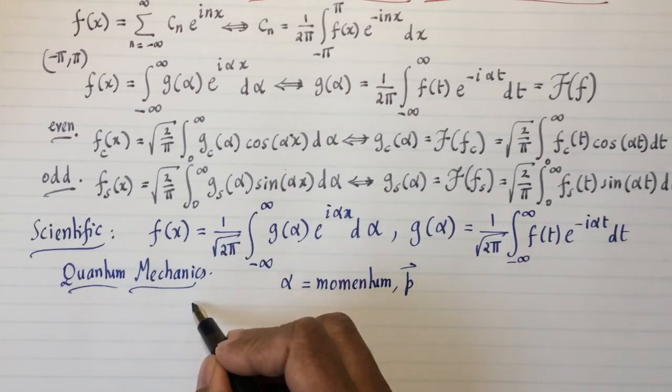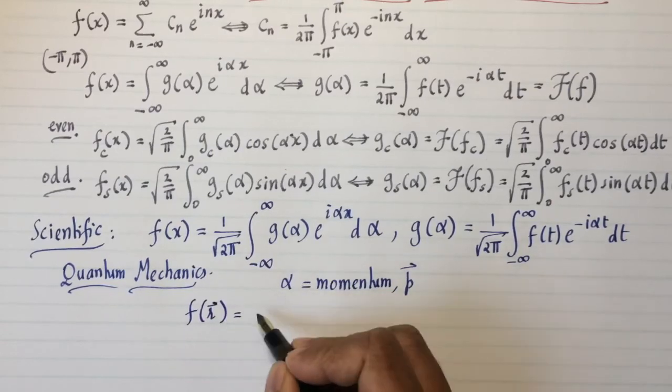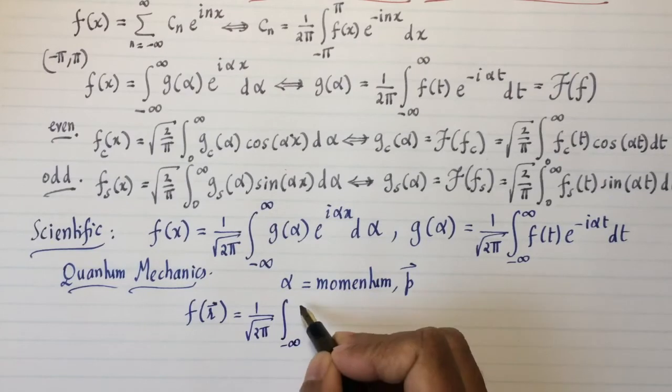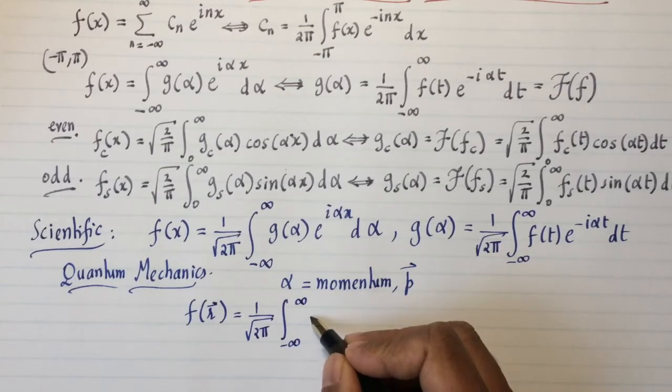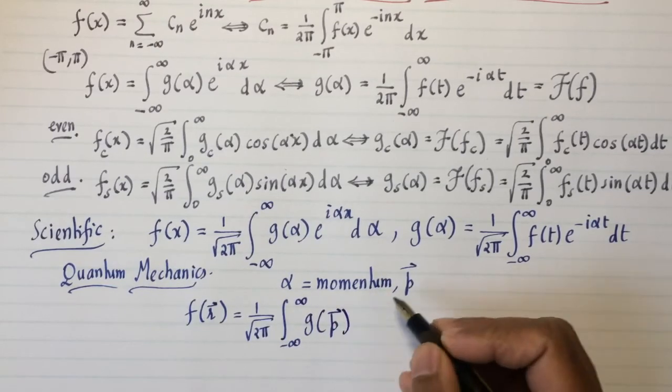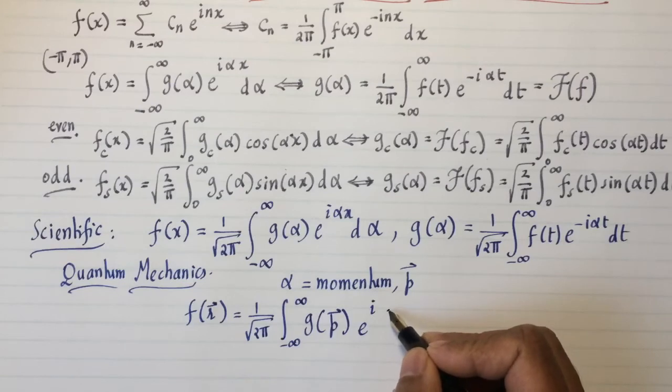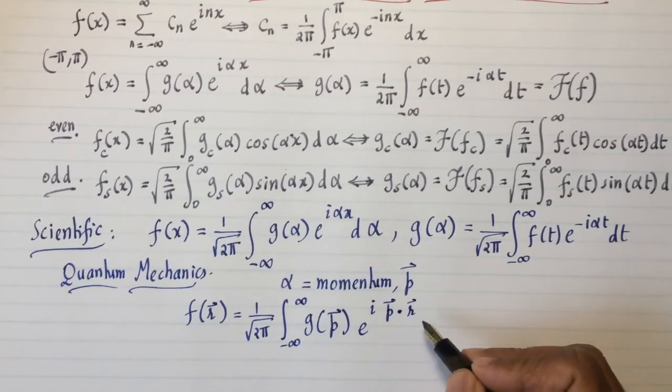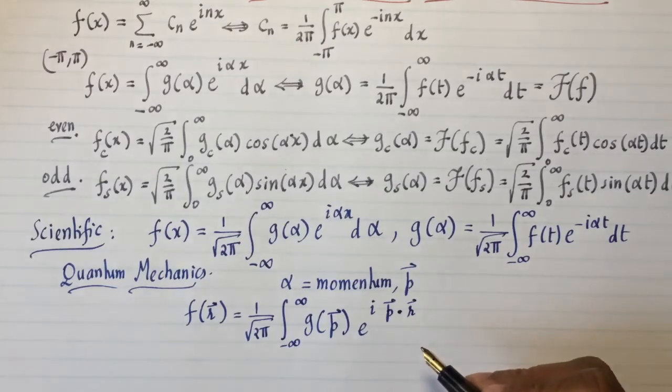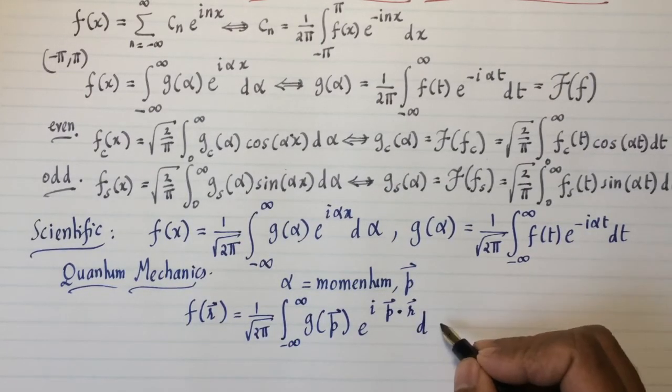So in quantum mechanics, you would actually write this as f of r equals 1 over the square root of 2 pi integral from minus infinity to infinity. And that's going to be g of some momentum p, e to the i p dot r, because that's the only way you can mate two vectors to perform a number.